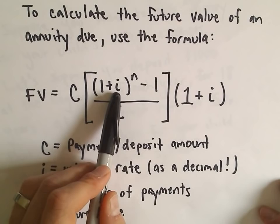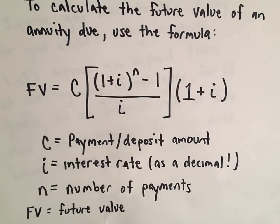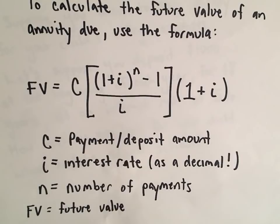i is going to stand for the interest rate. Again, you have to convert this to a decimal or things are going to be pretty crazy. Your answers just won't even make any sense. And N is going to be the number of payments.